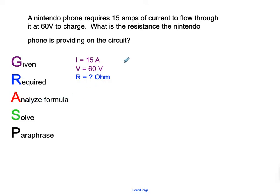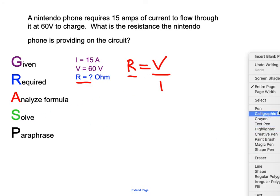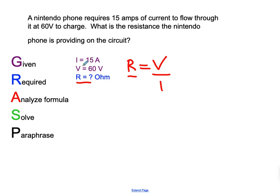So the formula, we need a formula that has all three of these in here. Well, we know that Ohm's law is R equals volts divided by current. That's pretty sweet. Do we need to manipulate this formula? No, because what we are solving for or what is required is already being solved for in this formula. So now all we have to do is solve this little puppy by substituting what we have, what we've given into this formula. So what does that look like? Resistance equals 60 volts, 60 volts divided by 15 amps.